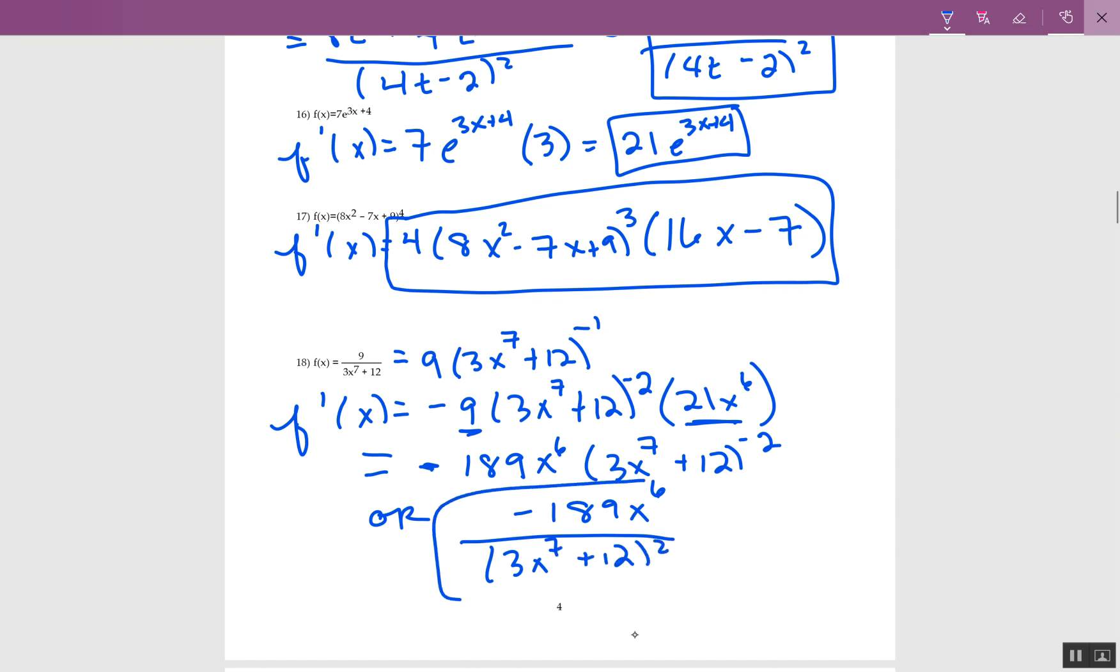Or you can write negative 189x to the 6th over 3x to the 7th plus 12 squared. I am happy with either one of these answers. So you pick which one you like.